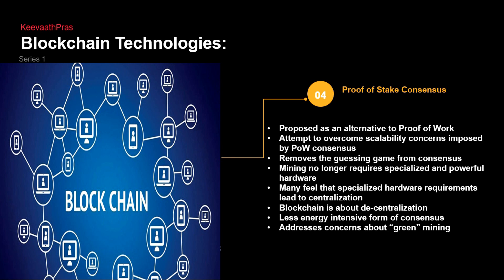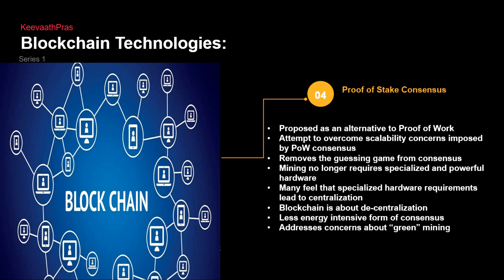As an alternative to proof of work, there is proof of stake, proposed to address scalability concerns and the going-green electricity consumption issue. This removes the guessing game, which is extremely good. Miners no longer need specialized or powerful hardware. Blockchain is all about decentralization, so less energy-intensive consensus mechanisms are needed — this is exactly the direction proof of stake goes.